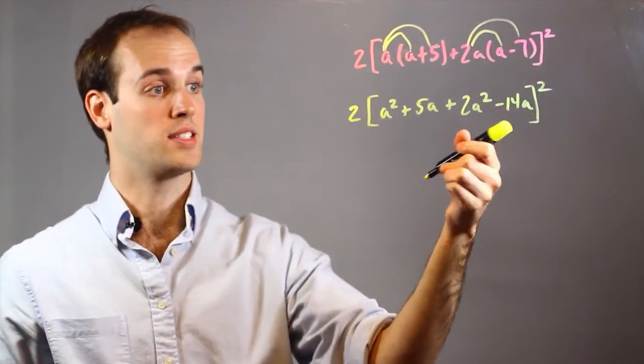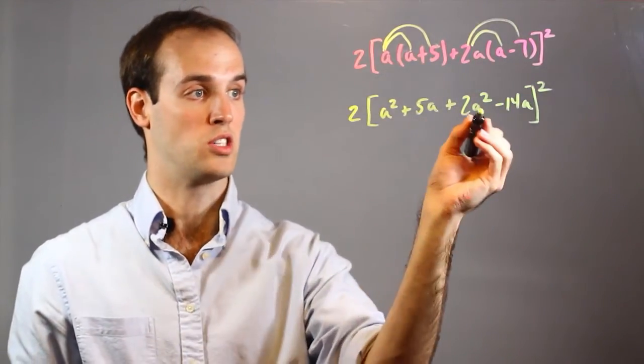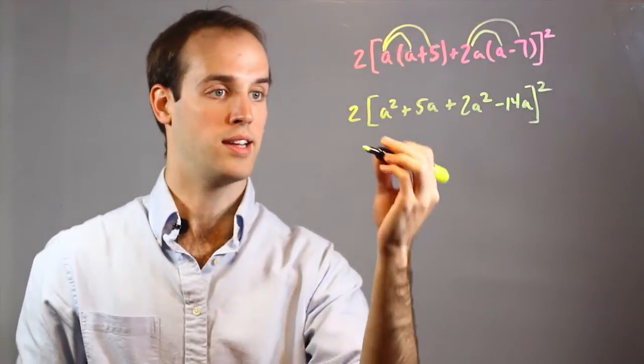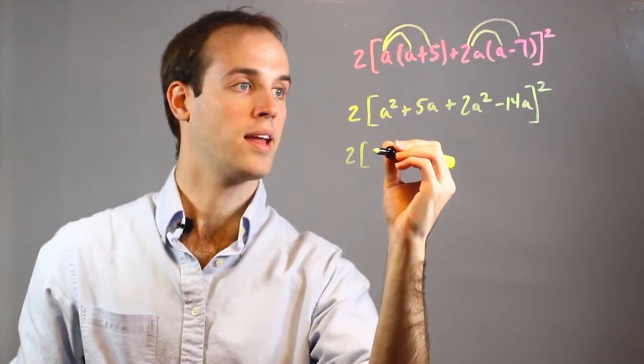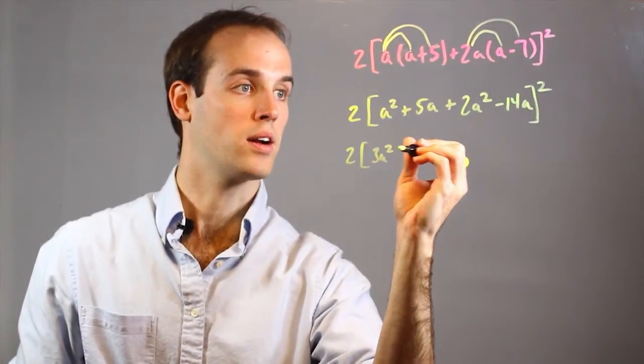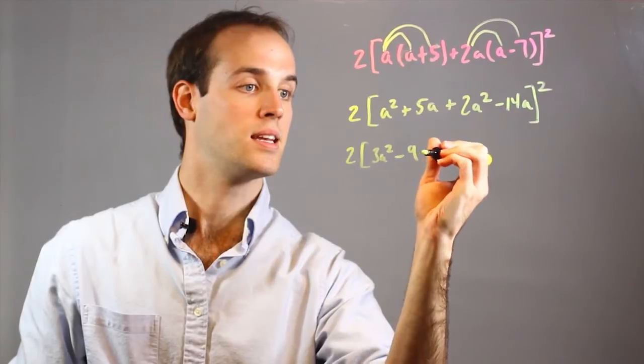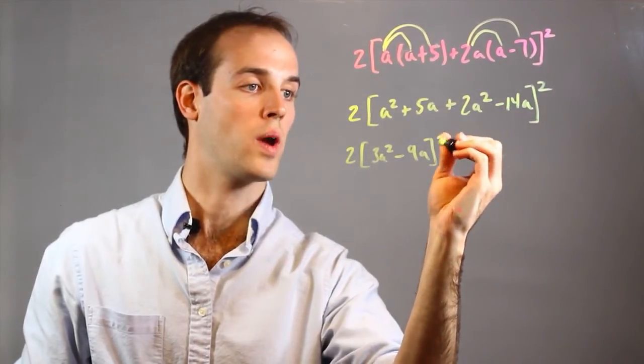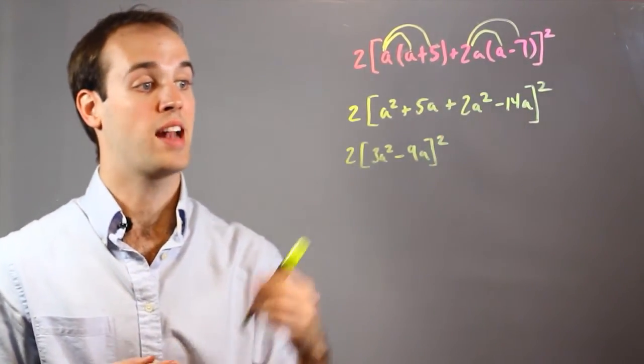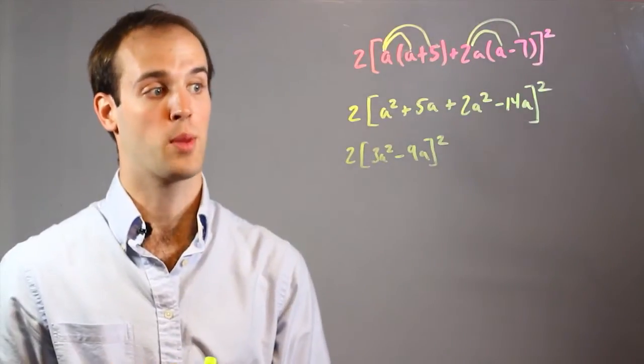Now within these parentheses, I can combine like terms. I have some A² and I have some regular A's. So I have 2[3A² - 9A]². Now that is as simple as I can get it within the parentheses.